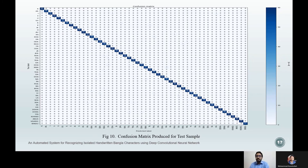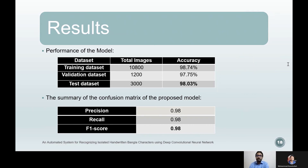The main reason behind this error is the structural similarities between these three characters. The final training and validation accuracy after completing training is 98.74% and 97.75% respectively. The model evaluated on the test dataset resulted in 98.03% test accuracy. Summarizing the confusion matrix, it holds a precision of 0.98, recall of 0.98, and an overall F1 score of 0.98.